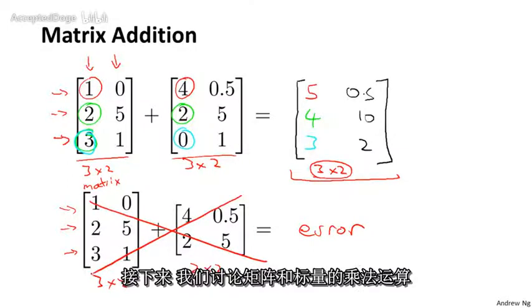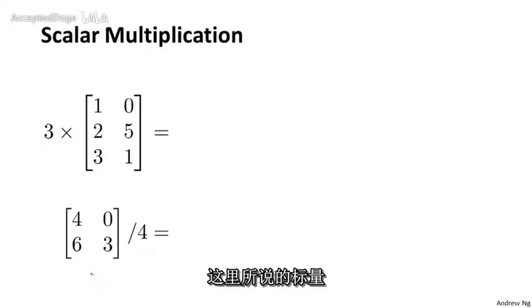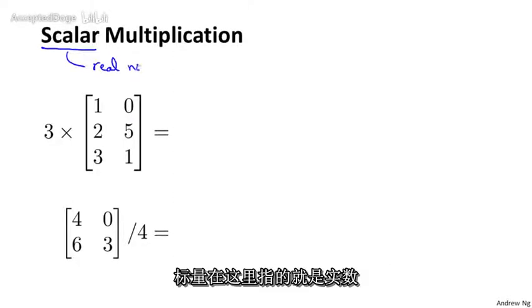So that's matrix addition. Next, let's talk about multiplying matrices by a scalar number. And the scalar is just maybe an overly fancy term for a number or a real number.